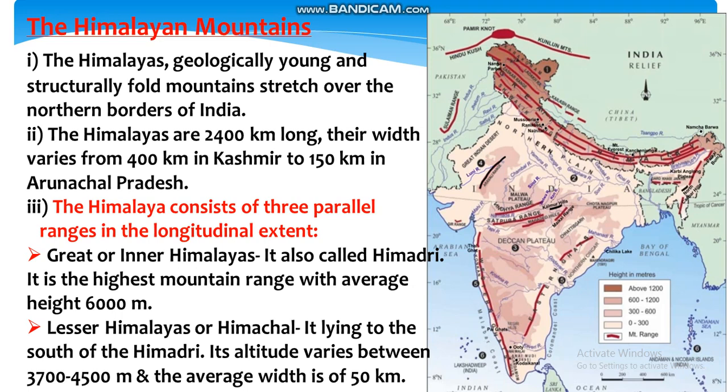The Himalayas consist of three parallel ranges in longitudinal extent. Pūre deśāntarīya vistār ke sāth Himālaya ko tīn bhāgoṃ meṃ bāṭ sakte haiṃ. First: the Great or Inner Himalayas, also called Himadri. It is the highest mountain range with an average height of 6000 metres. Mahān yā āntarik Himālaya, ise Himadri bhī kahā jātā hai; yah ucchatam parvat śṛṃkhalā hai jiskī ausat ūṃcāī 6000 metre hai.